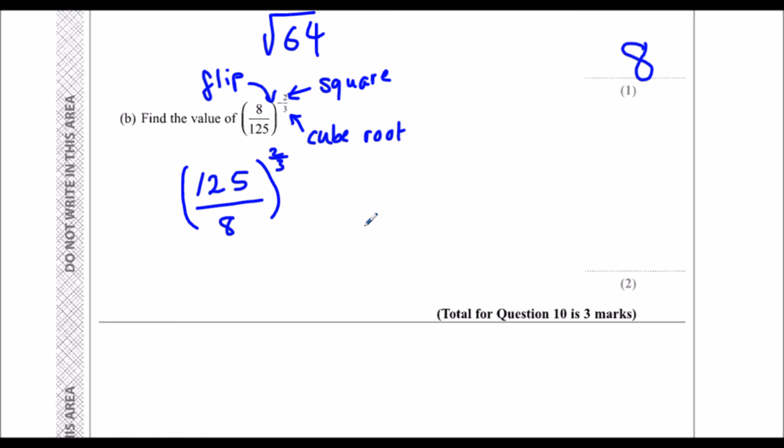The cube root of 125 is 5 because 5 cubed, 5 times 5 times 5, makes 125. The cube root of 8 is 2 because 2 times 2 times 2 makes 8.